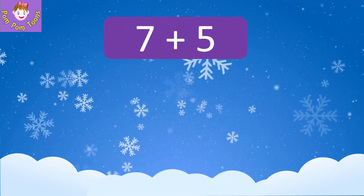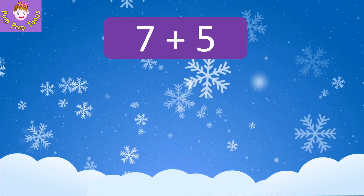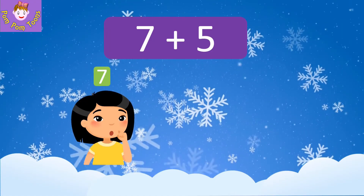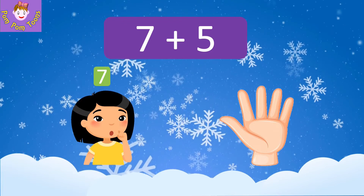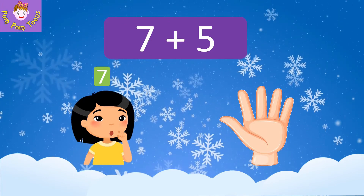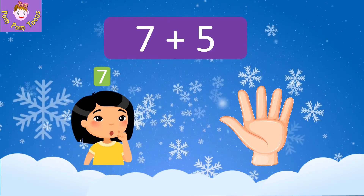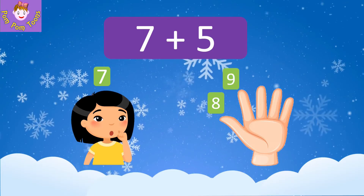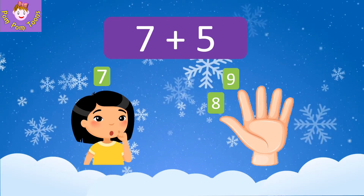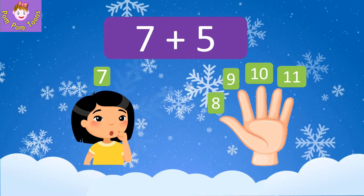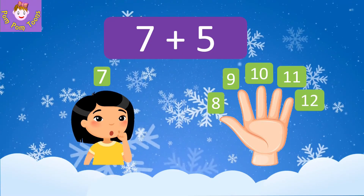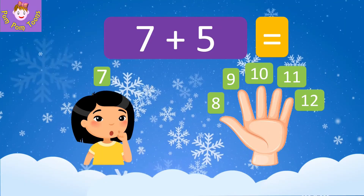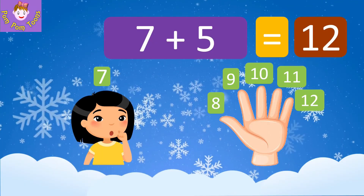Add seven and five. Keep seven in your mind and open five fingers. Count after seven: eight, nine, ten, eleven, twelve. Seven plus five is equal to twelve.